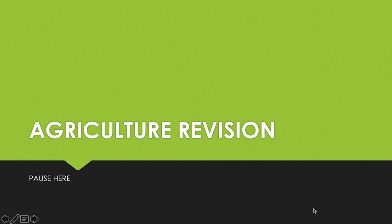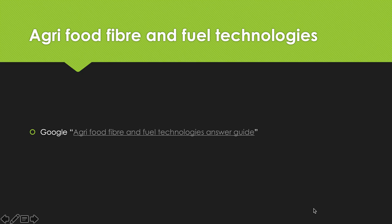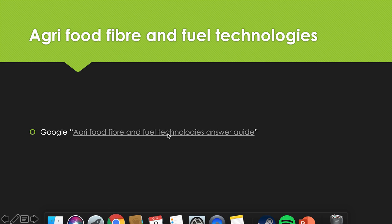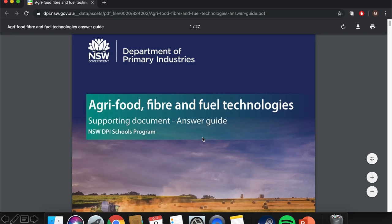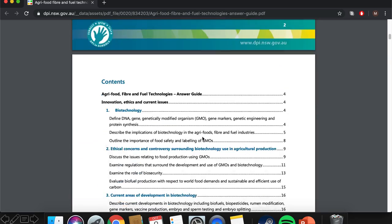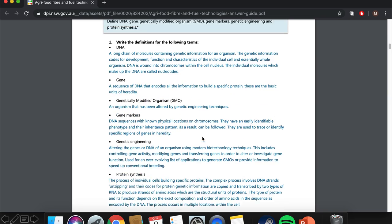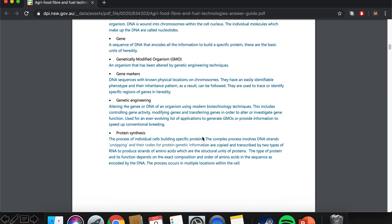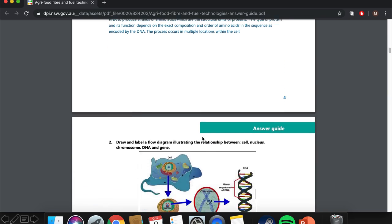Now we're moving on to our final topic. We are looking at AgriFood, Fibre and Fuel Technologies. I'll give out these booklets in class, but if you Google 'AgriFood, Fibre and Fuel Technologies Answer Guide,' I'll put a hyperlink here — it will take us to the answers. You get a PDF that goes through everything we covered, and there's a little bit more detail in there as well for some of the answers that we should add to our notes.